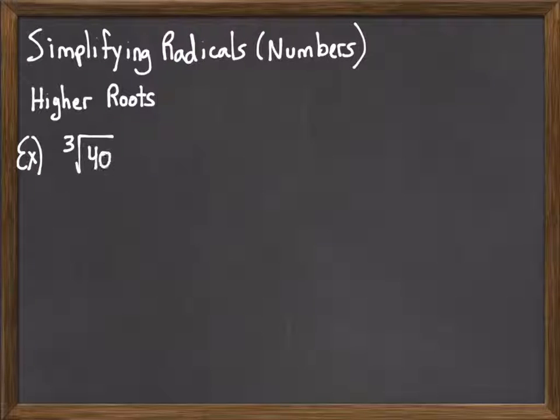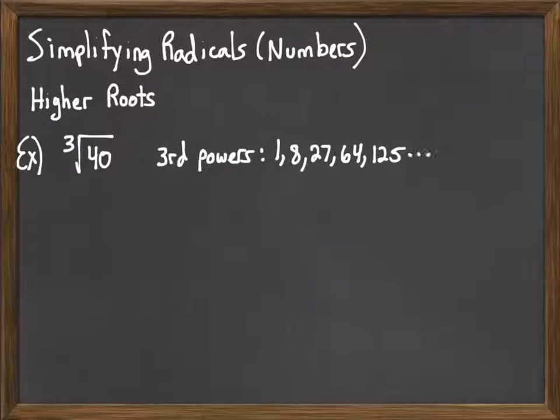So for example, if we did cube root of 40, we would be needing to look at third powers. In other words, start taking your numbers 1, 2, 3, 4, 5, and so on, and raising them to the third power. You get the numbers 1, 8, 27, 64, 125, and then so on as far up as you would need to go.